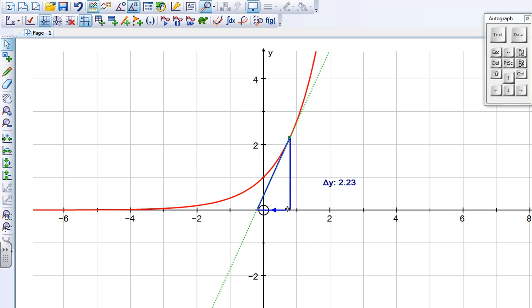And then again as I move my point along I can see that my gradient changes. Now because the bottom section my delta x always remains along the x-axis, that means that the delta y also represents the y coordinate of this point. So there we've demonstrated that the gradient function must be exactly the same as the function itself.